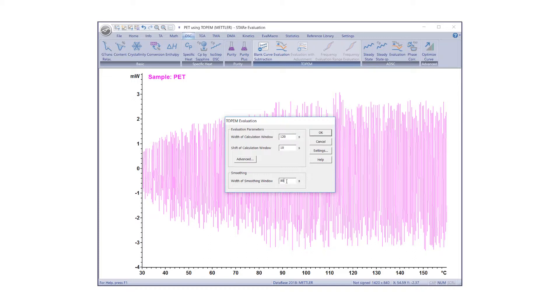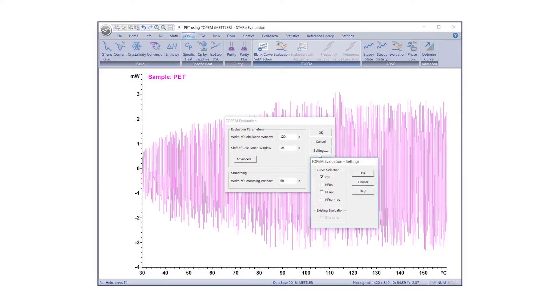In many cases, the default values shown on the screen can be used for the first calculation. Recommendations for choosing the right values can be found under the Help menu. Click on Settings to select the curves you want to display.